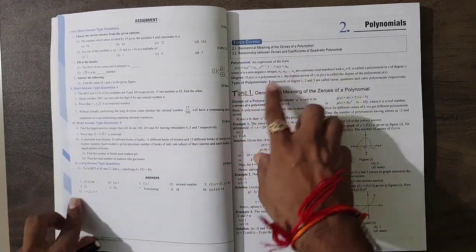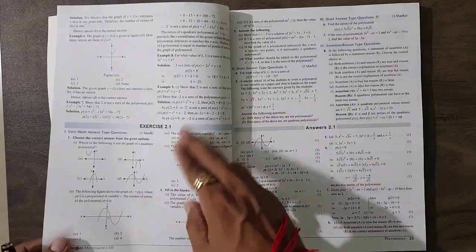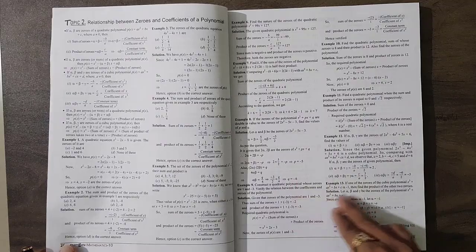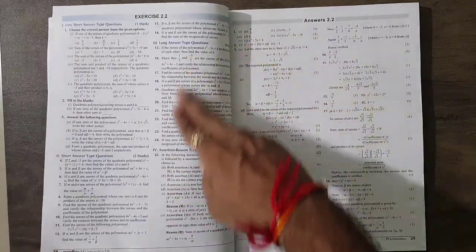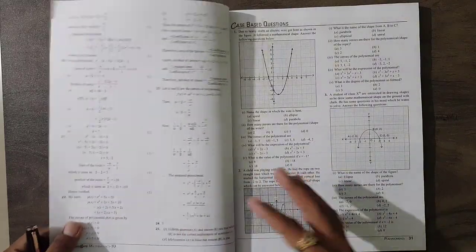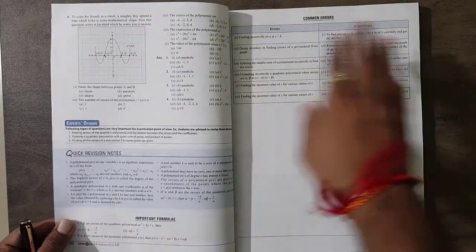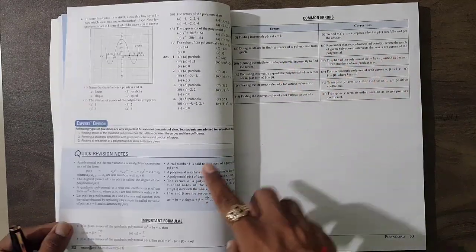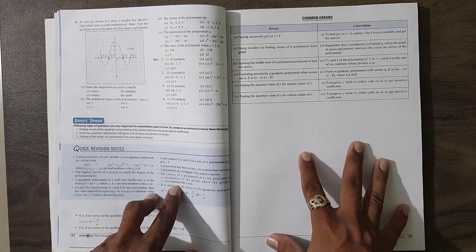You can see in the second chapter also the same: topics covered, topics, then examples, then exercise, then solution. More number of examples are given to you and then big exercise with solution. Then case study based questions. This is inside every chapter - common error also, quick revision notes. One of the best books I can suggest you to buy and start practicing.